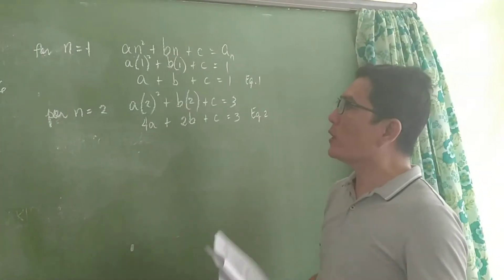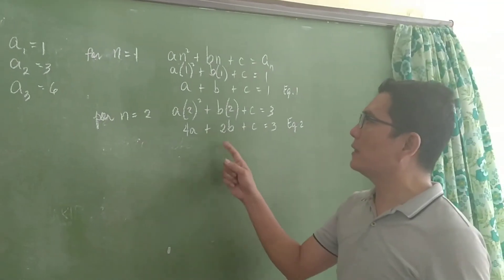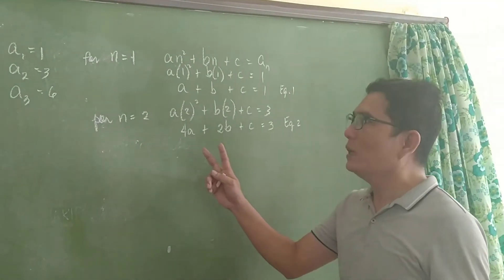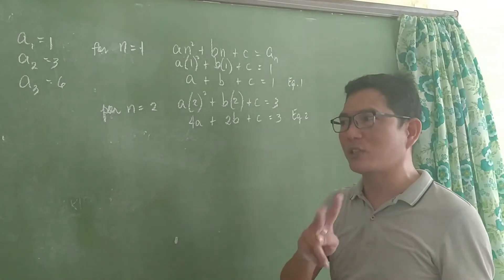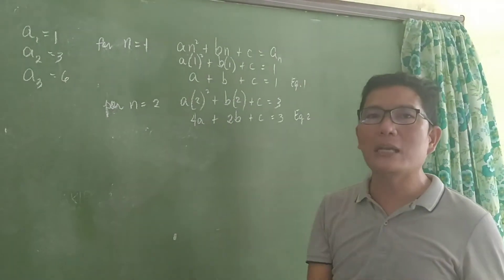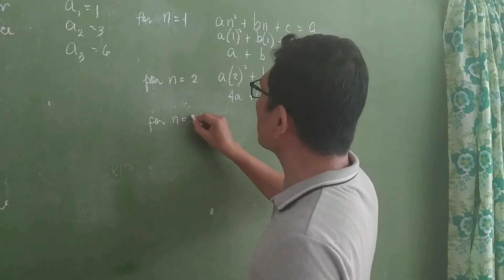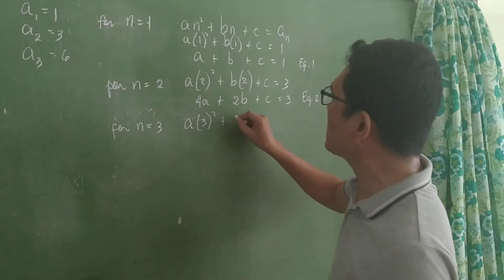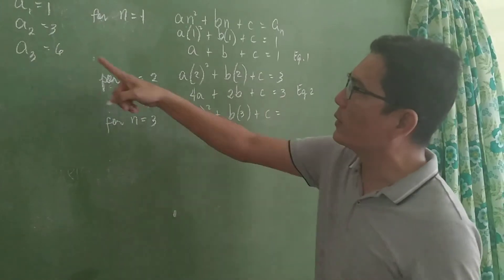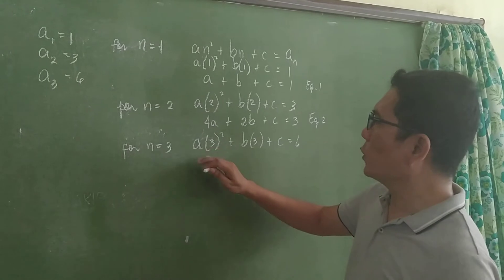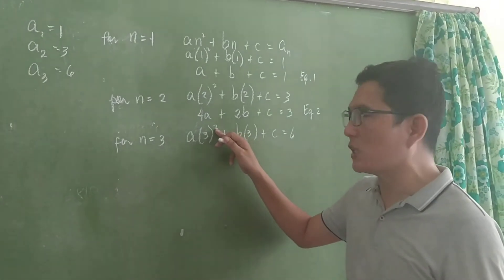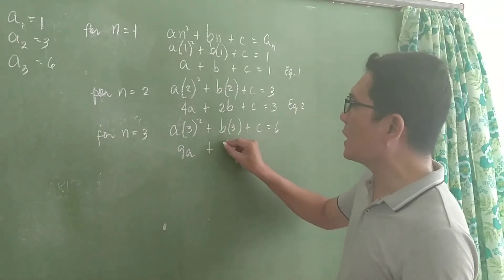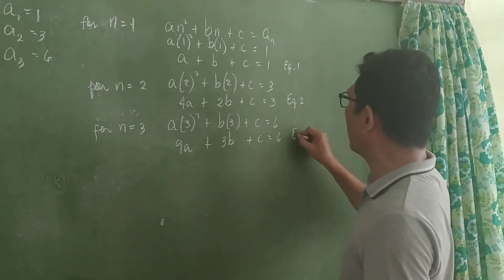For equations involving 3 variables, we need 3 equations. So for the third term, where n = 3: a(3²) + b(3) + c = 6. Since 3 squared is 9, this becomes 9a + 3b + c = 6. This is our Equation 3. We now have three equations to solve for the values of a, b, and c.